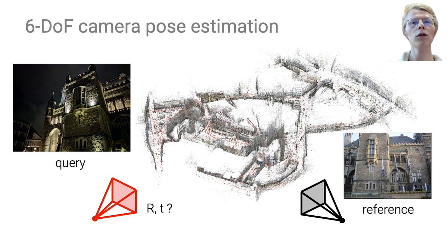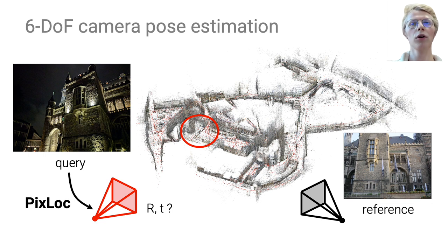Often we also have a coarse prior on the pose for image retrieval or even GPS. The contribution of this work is PixLoc, a learning algorithm that estimates the pose of a given image.